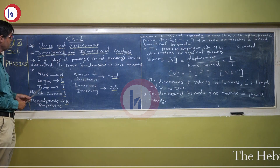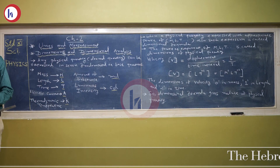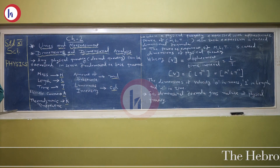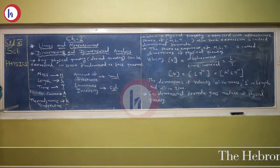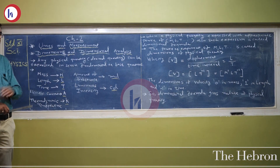These seven fundamental quantities are: mass, length, time, electric current, thermodynamic temperature, amount of substance, and luminous intensity.